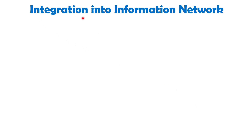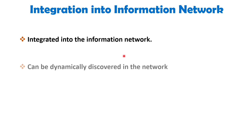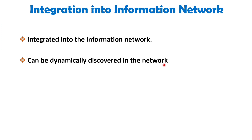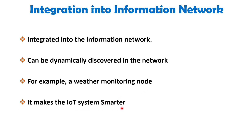The next IoT characteristic is integration into information network. IoT devices are usually integrated into an information network that allows them to communicate and exchange data with other devices and systems. IoT devices can be dynamically discovered by other devices on the network and can describe themselves to other devices or user applications. For example, a weather monitoring node can describe its capabilities to another connected node so that data from many connected nodes can be aggregated and analyzed to predict weather conditions.